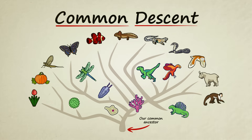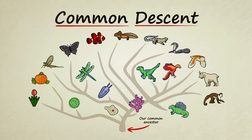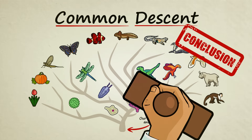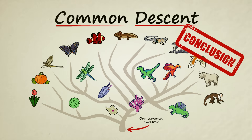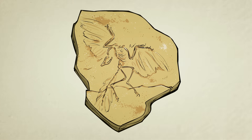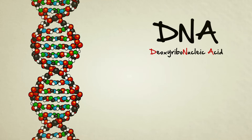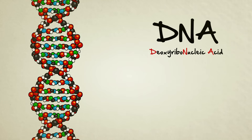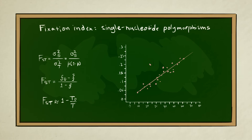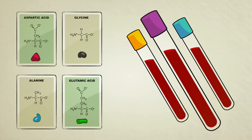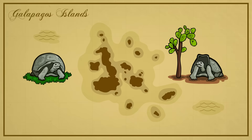The common descent of all life on Earth is not a directly observable fact. We have no way of going back in time to watch it happen. Instead, common descent is a conclusion based on a massive collection of facts found independently in the study of fossils, genetics, comparative anatomy, mathematics, biochemistry, and species distribution.